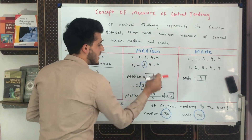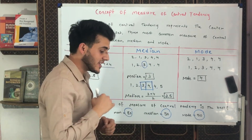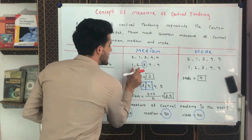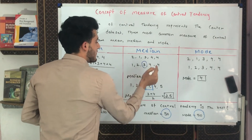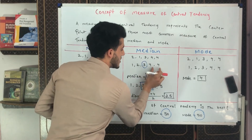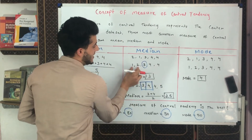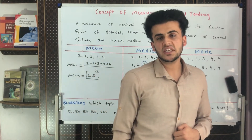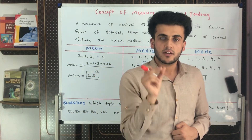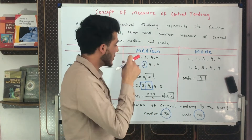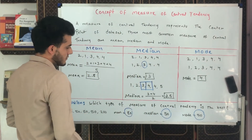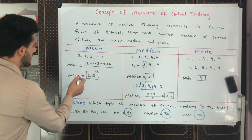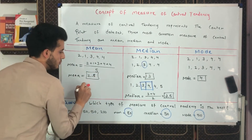After arranging the values, the smallest is one and the highest is four. When finding the center point, we start from both ends. We see that two values are on the left and two values are on the right, and three is in between — so three becomes the median, the value located at the center. The median is three. There is a difference: mean is 2.8 and median is three.